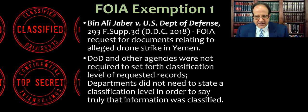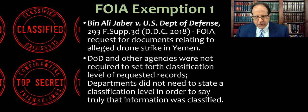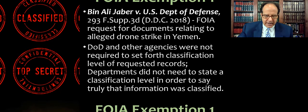The third case is from the District Court of D.C. in 2018: Bin Ali Jaber versus the Department of Defense. This was a FOIA request for documents relating to an alleged drone strike in Yemen by our government. The Department of Defense and other agencies were not required to set forth classification levels of requested records. The requester said you should have to tell me at what level this information is classified. But the court held that they don't even have to say that — they don't have to state a classification level in order to say truly that the information was classified.